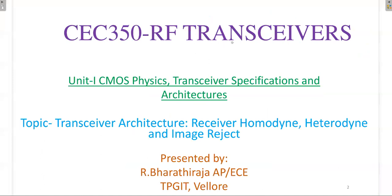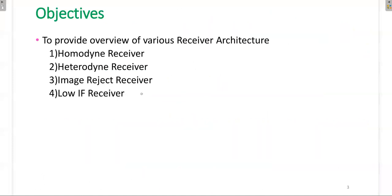Welcome to the course on RF transceivers, Unit 1, CMAS Basics - Transceiver Specifications and Architectures. The topic is Transceiver Architecture, covering Homodyne Receiver, Heterodyne Receiver, and Image Reject Receiver. The objective of this presentation is to discuss various types of receiver structures: Homodyne Receiver, Heterodyne Receiver, Image Reject Receiver, and Low IF Receiver, including the architecture, concept, and advantages and disadvantages of each.